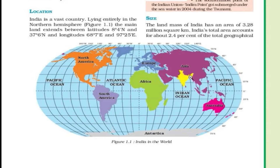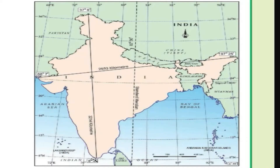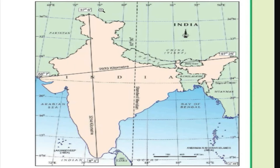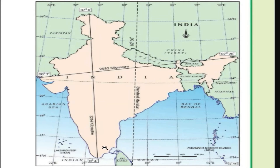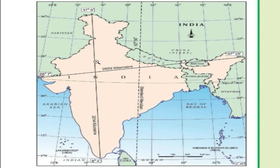India lies in the northern hemisphere. Its latitude extends between 8 degrees 4 minutes North and 37 degrees 6 minutes North. Both values are North, since we know that India lies in the northern hemisphere.